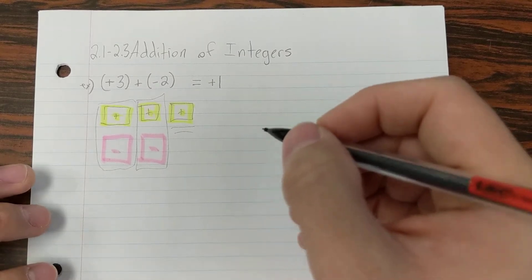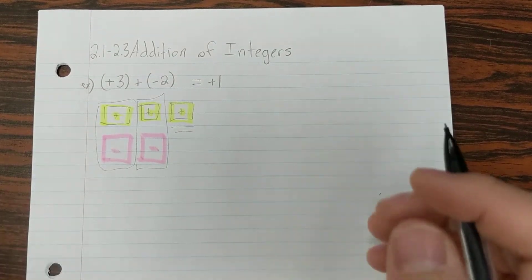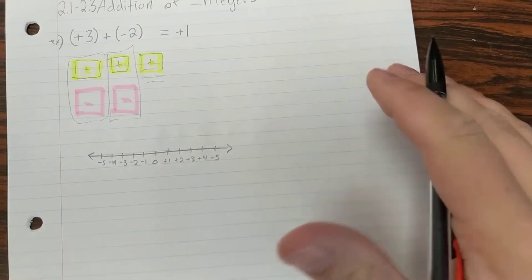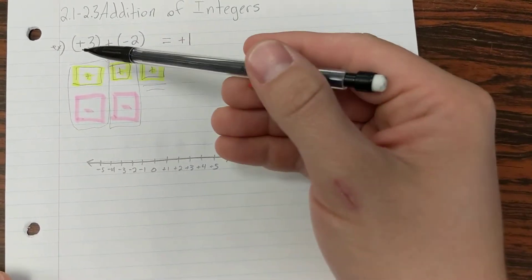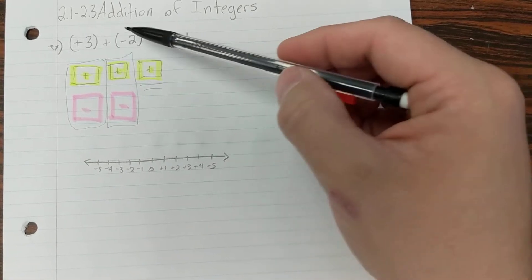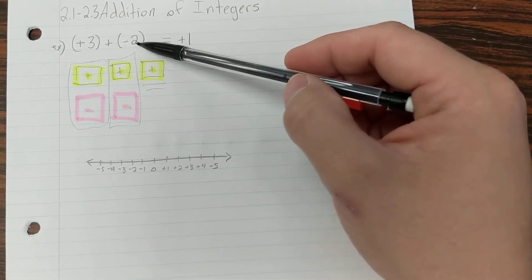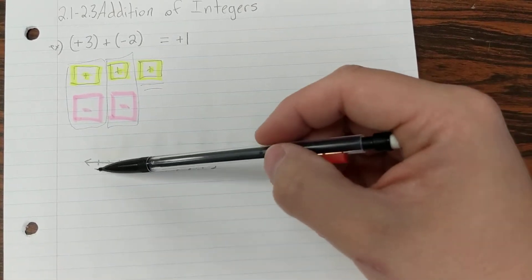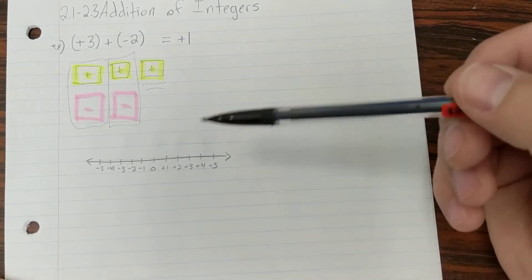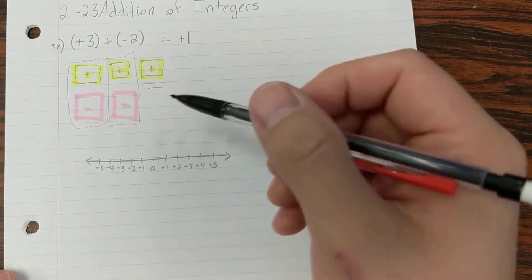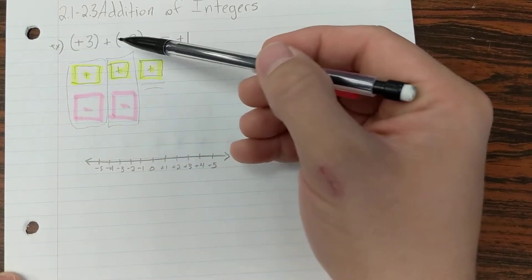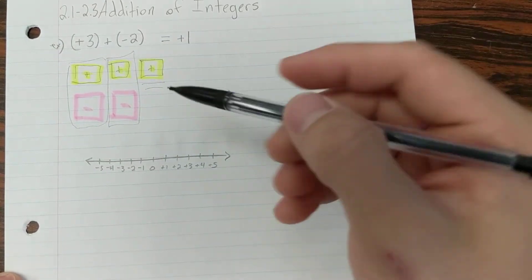Let's look at it using a number line instead. Alright, so I've drawn my number line, and one quick way that you can decide how to draw up your number line is just to quickly add 3 plus 2, these numbers, and that's 5. So you can start at negative 5 and go up to positive 5, and that's just a quick way that you'll always have enough room to fit all of this.